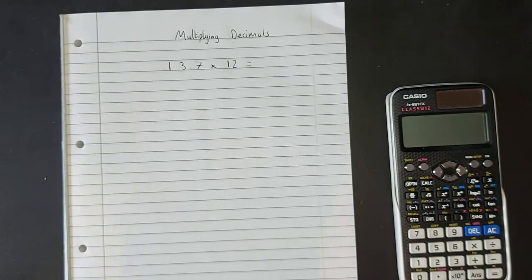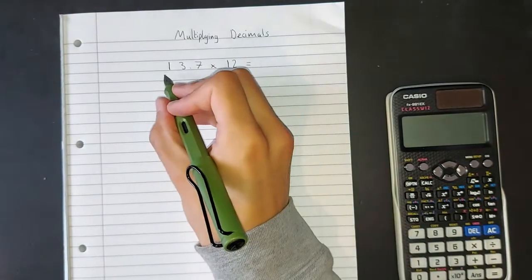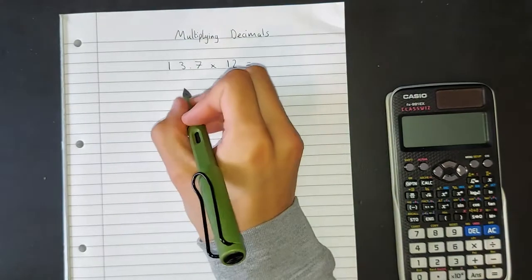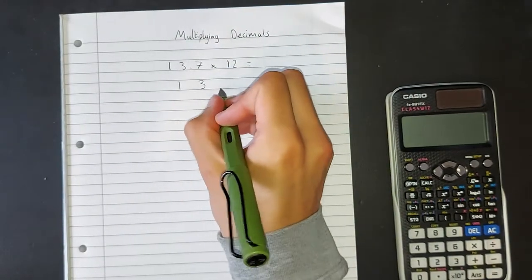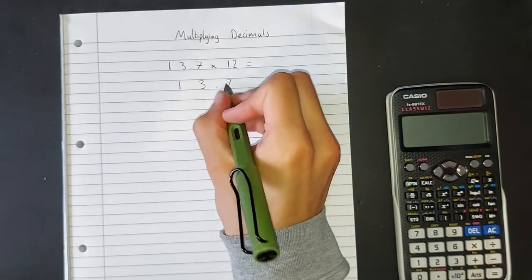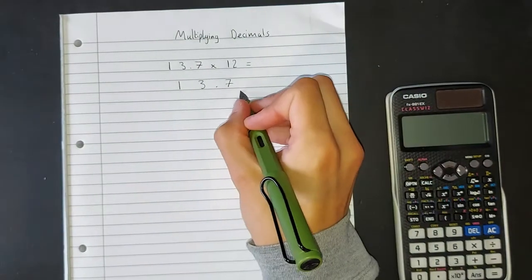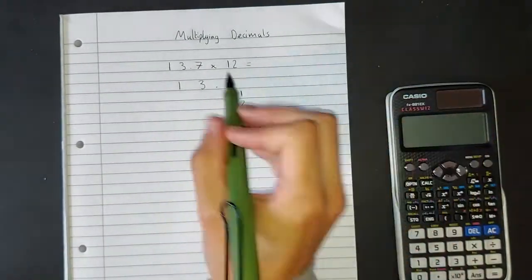Right then, so I'm going to use Napier's, as I said. If you remember, you write a number across the top and down the side. So let's have 13.7, and let's have 12 down the side. Now you draw your grid.